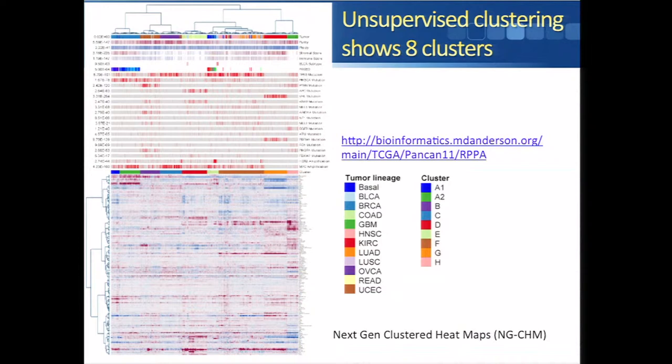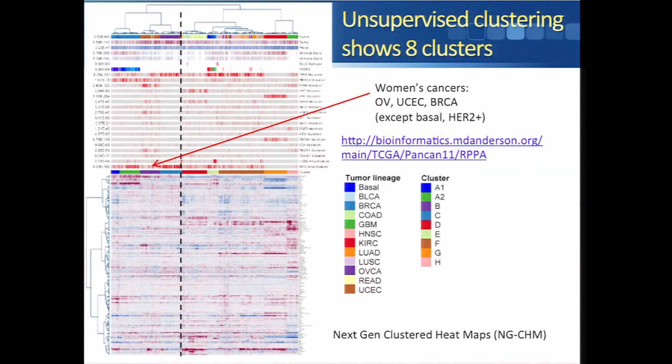Moving on, this is the clustered heat map for the 3,467 samples by 181 antibodies. Using unsupervised clustering, we got eight different clusters. We nicely got the women's cancers — luminal breast, endometrial, and ovarian — in one major cluster on the left-hand side. Basal breast and HER2-breast were not in that cluster; they were quite distinct. The URL is provided there using the tool called Next Generation Clustered Heat Maps developed at MD Anderson.